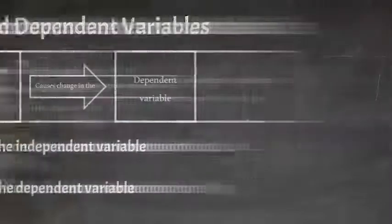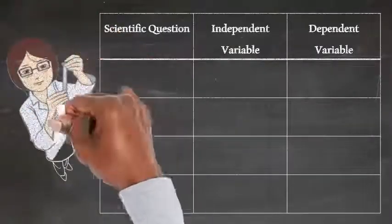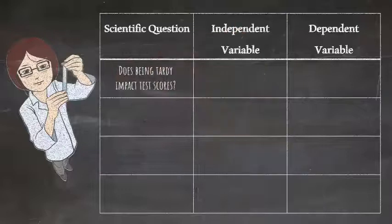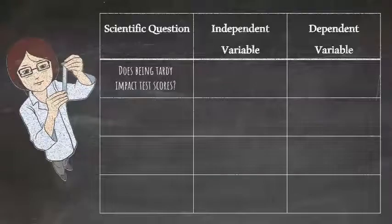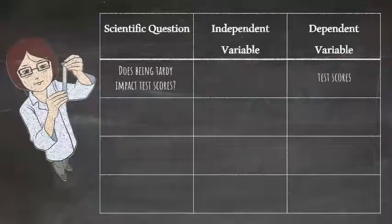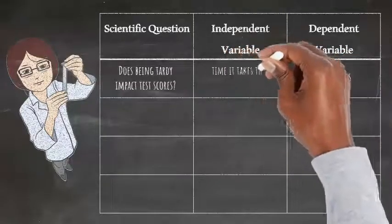Let's investigate some scientific questions. Does being tardy impact test scores? The time it takes to get to class is independent and would have caused a change in the test scores. So test scores would be the dependent variable because it depends on the time it takes to get to class.